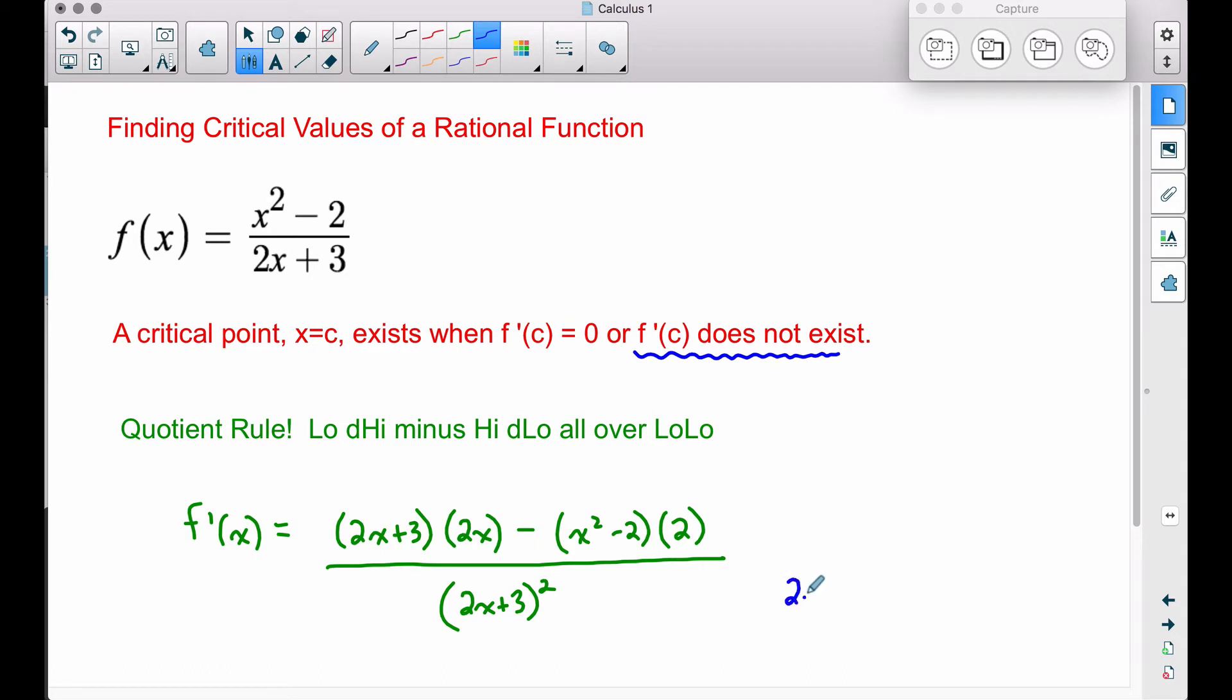We can set this denominator equal to zero to find where the derivative does not exist. So therefore, taking 2x plus 3 and setting it equal to zero, you don't have to worry about the squared piece. Whatever makes this piece equal to zero, well zero squared is still going to give you zero in the denominator. So solving that equation real quick, we subtract 3 and divide by 2, so therefore x equals negative 3 halves.